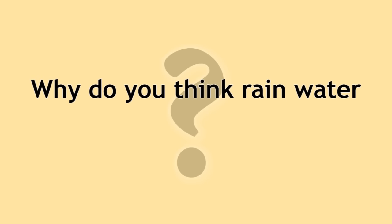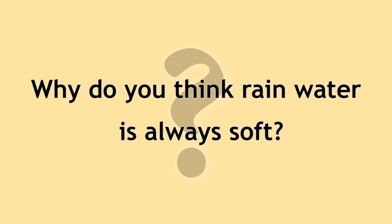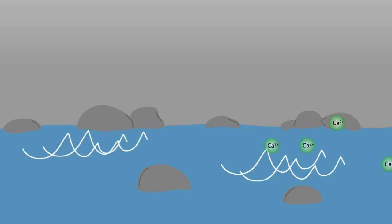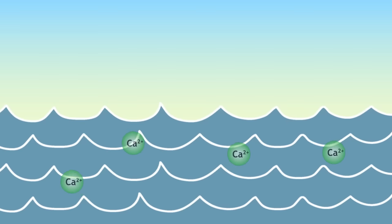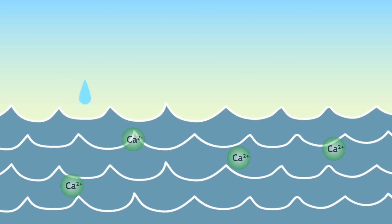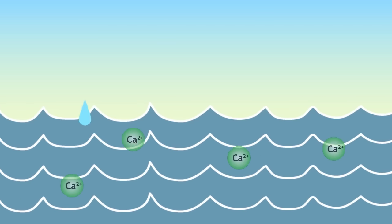So here's a question: why do you think rainwater is always soft? Well, all the salts which dissolve out of the rocks end up in the seas, but when water evaporates, later forming the rain, the salts are left behind in the seas, meaning that rainwater is always free of salts and therefore soft.